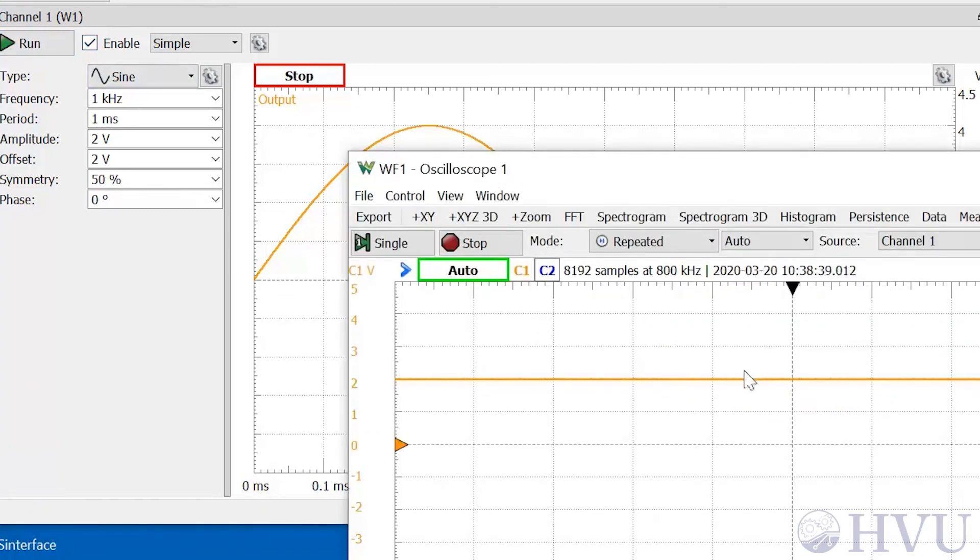The scope indicates that a constant value of 2 volts is still being output by the waveform generator.